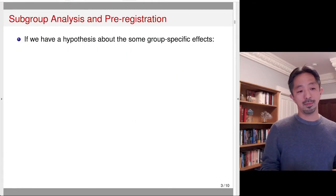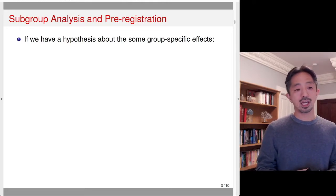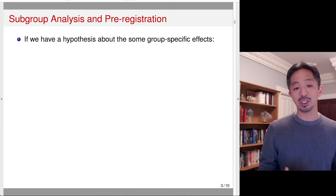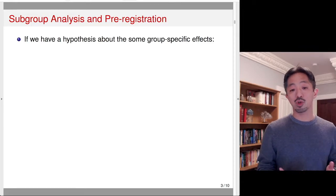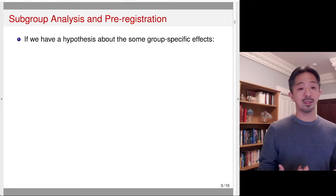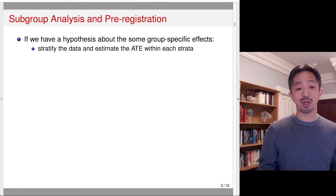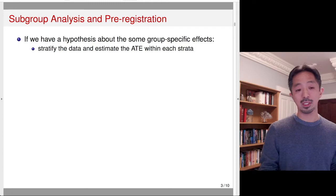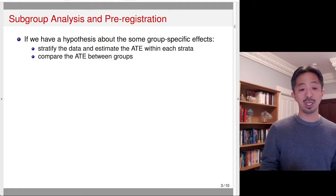Before discussing machine learning, let's think about simple subgroup analysis and preregistration. If you have a very specific hypothesis about some group-specific effects — for example, you may hypothesize that a particular treatment affects men positively but women negatively — you can simply stratify the data between men and women and estimate the average treatment effect within each stratum. If it's an experimental study, you can estimate using the difference in means among the men and among the women and then compare the ATE between these groups.